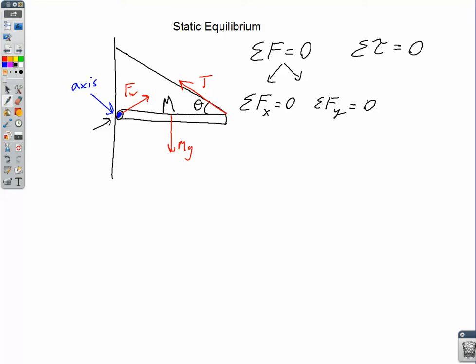So, looking at the components of forces in the x direction, we have a component from the wall force, and we have a component from the tension force. And, you can see right away, since those are the only two horizontal components, those must be equal and opposite. So, we can go ahead and set those equal to each other.